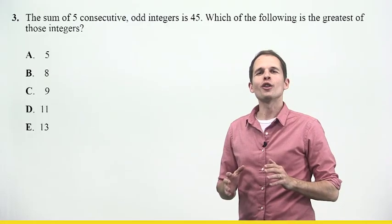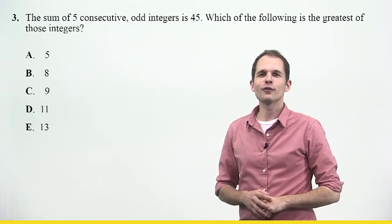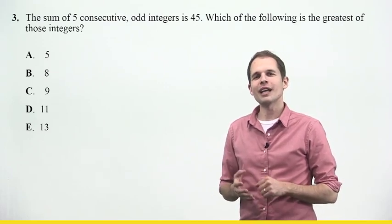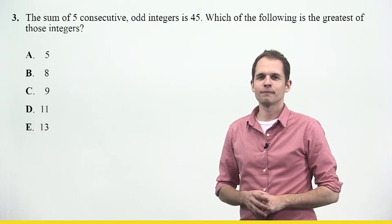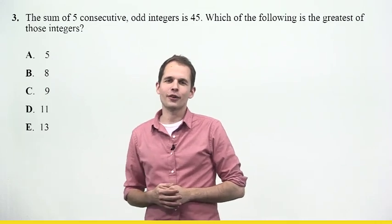And then getting rid of every answer choice that's outside of that range. Question three says, the sum of five consecutive odd integers is 45. Which of the following is the greatest of those integers? Then I look at the answer choices. I see 5, 8, 9, 11, and 13.